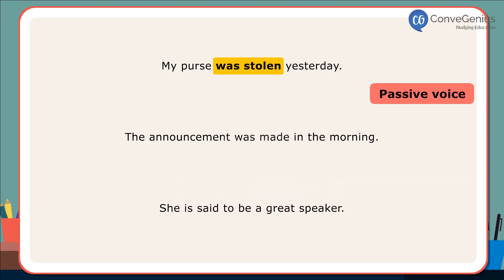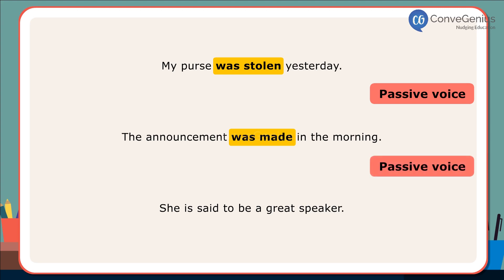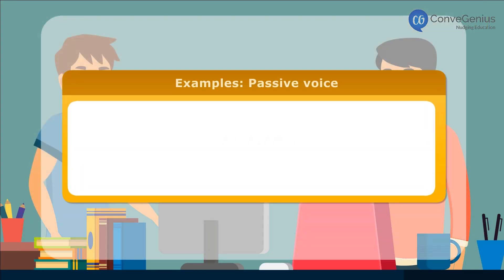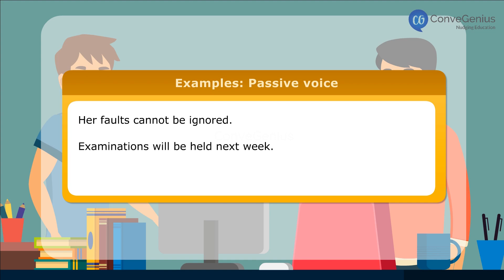In the second sentence, again passive voice has been used. The action is more important than the doer. 'Was' is used with past participle 'made' to form passive structure. In the third sentence, 'is' is used with 'said' to form passive voice. Her faults cannot be ignored. Examinations will be held next week. Your parcel will be delivered safely within a week.